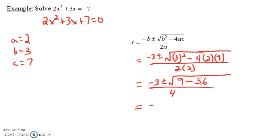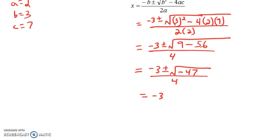Notice we get a square root of a negative number. We have negative 3 plus or minus the square root of negative 47, all over 4. The square root of negative 47 equals the square root of 47 times i. So our two solutions are negative 3 plus the square root of 47 times i, all over 4, and negative 3 minus the square root of 47 times i, all over 4.